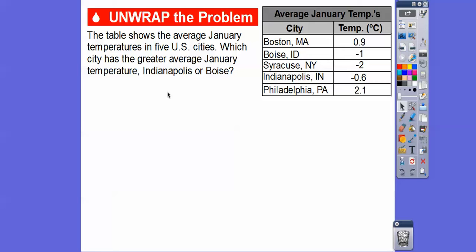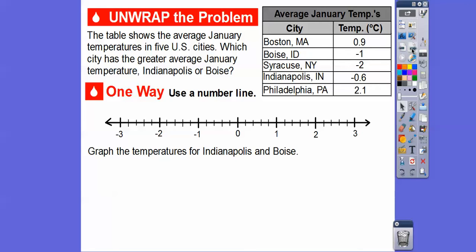Is it Indianapolis or is it Boise? Indianapolis is negative 0.6 degrees Celsius and Boise is at negative one. One way — and this is my favorite way — is to use a number line. I encourage this with my students taking high school: graph these points on a number line. So let's graph the temperatures for Indianapolis and Boise.